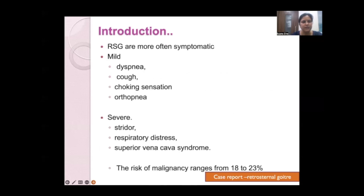Patients with retrosternal goiter may present with varied symptoms of respiratory compromise. Mild symptoms include dyspnea, cough, choking sensation, and orthopnea. In severely symptomatic patients, there may be stridor, respiratory distress, and superior vena cava syndrome. The risk of malignancy ranges from 18 to 23 percent in such patients.